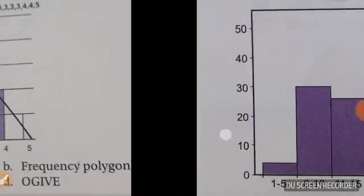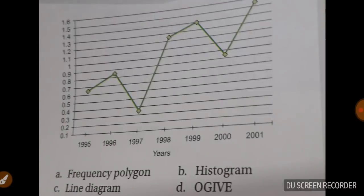And this was the histogram. Now tell me what is this one. Whether it is frequency polygon, line diagram, ogive, or histogram. So it is a frequency polygon presenting variation by line. So it is basically a line diagram.